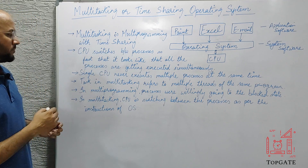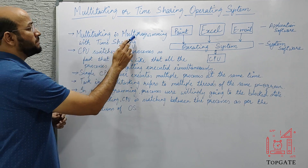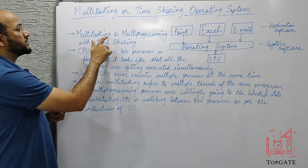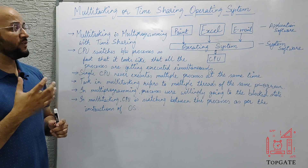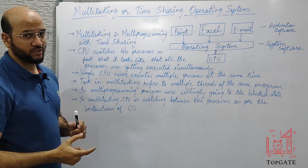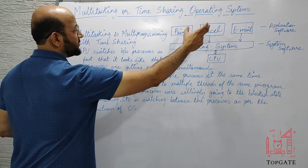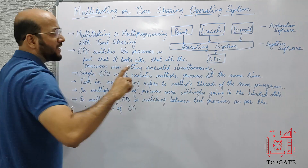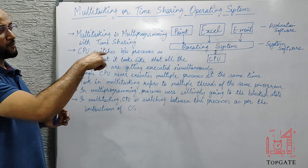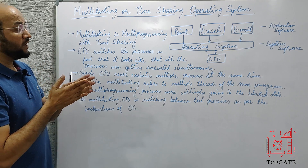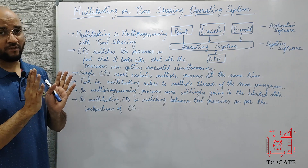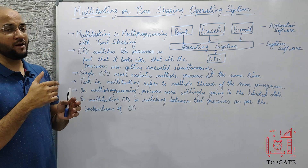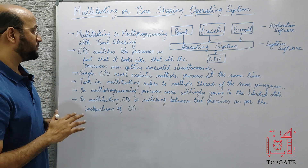The first key point: multitasking is multiprogramming with time sharing — we are sharing the CPU time between various processes. We execute one process for a time, then another, then another, cycling back repeatedly. Unlike multiprogramming, this is done at the OS level, not the process level. It is not the demand of the process to leave the CPU — it is the demand of the OS and CPU to context switch from one process to another.